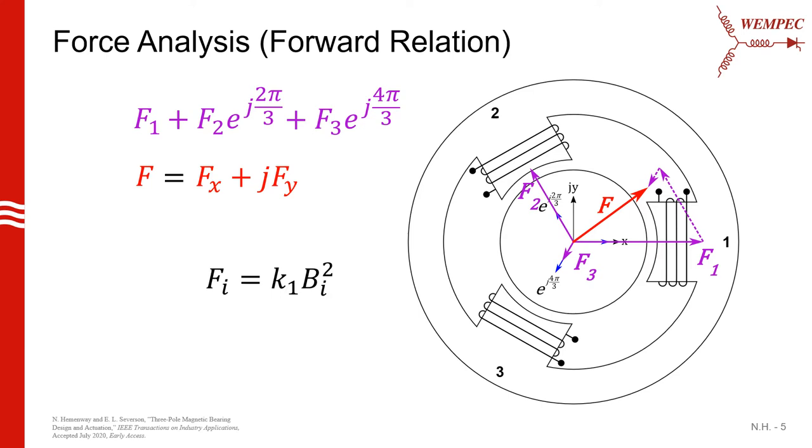If we then note that the force produced by any one of the teeth is simply proportional to the field in front of that tooth, we end up with our final force expression that relates the force output of our bearing to the fields that occur in front of each of the teeth. Note that the A term is simply this complex exponential that I have rewritten for simplicity. We can see that the force expression takes on the same form as the space vector definition commonly encountered in electric machines.